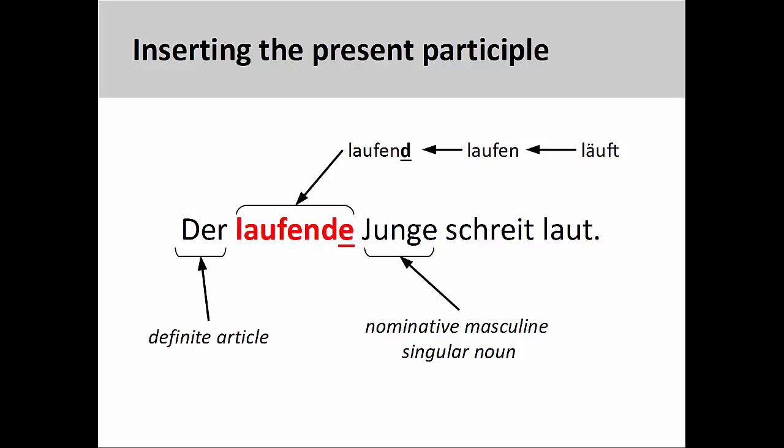When we form an extended modifier, what we are basically doing is inserting the relative clause before the noun it modifies to function as a type of adjective. To form a present participle, you simply take the verb in the relative clause, form its infinitive, and then attach a -d suffix to the infinitive. This process creates the present participle laufend, running.